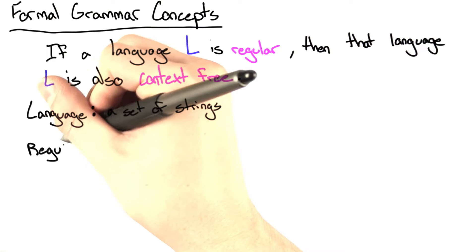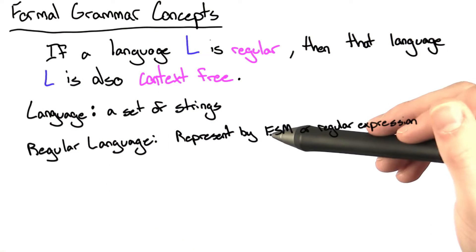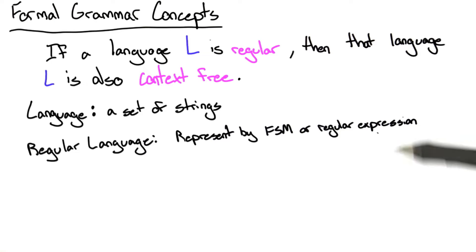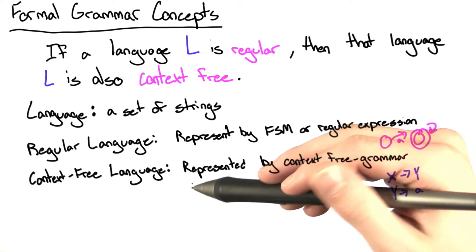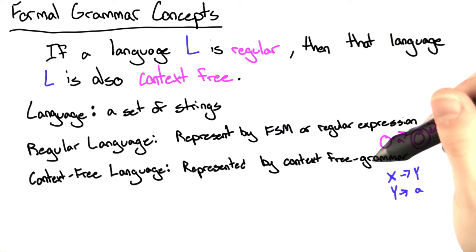A regular language is a type of language. In particular, it's a set of strings that can be represented by a finite state machine or a regular expression. A context-free language is also a set of strings, but can be represented by context-free grammar.